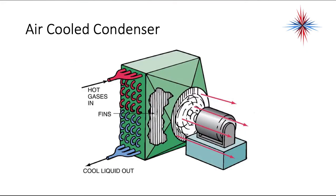Air-cooled condensers suck air through the condenser coil. The fan motors, regardless of where they are mounted, do not blow air through — they suck air through. We send hot gases in, possibly through a distributor, and we get a cooler liquid out. The purpose of a condenser is to condense the gas into a liquid.